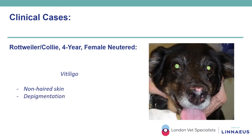A four-year-old female neutered Rottweiler cross presented with a history of progressive depigmentation of the nasal planum. The list of differential diagnoses was vast, inclusive also of vitiligo, which was further confirmed on histopathology. Vitiligo is an acquired immunomediated skin disease associated with melanocyte destruction, which results in areas of leukoderma with or without leukotrichia. It is uncommon and reported as hereditary in different breeds, including Rottweilers.